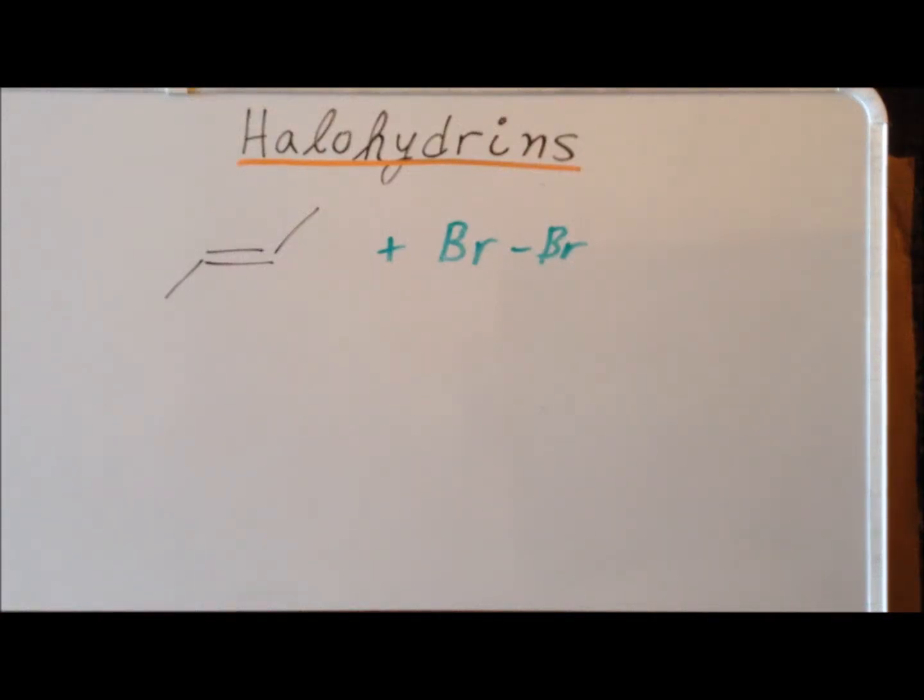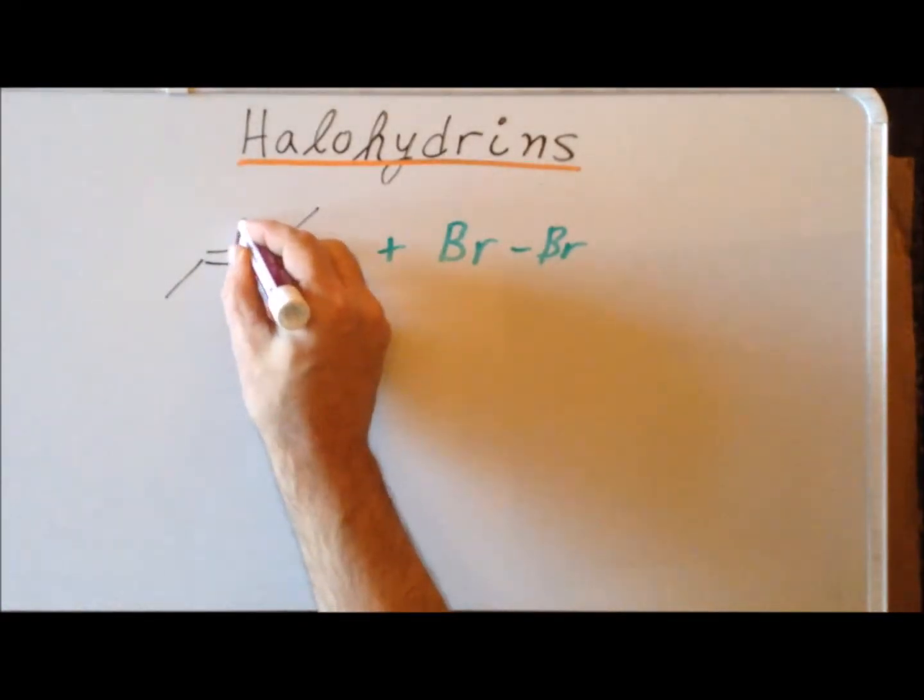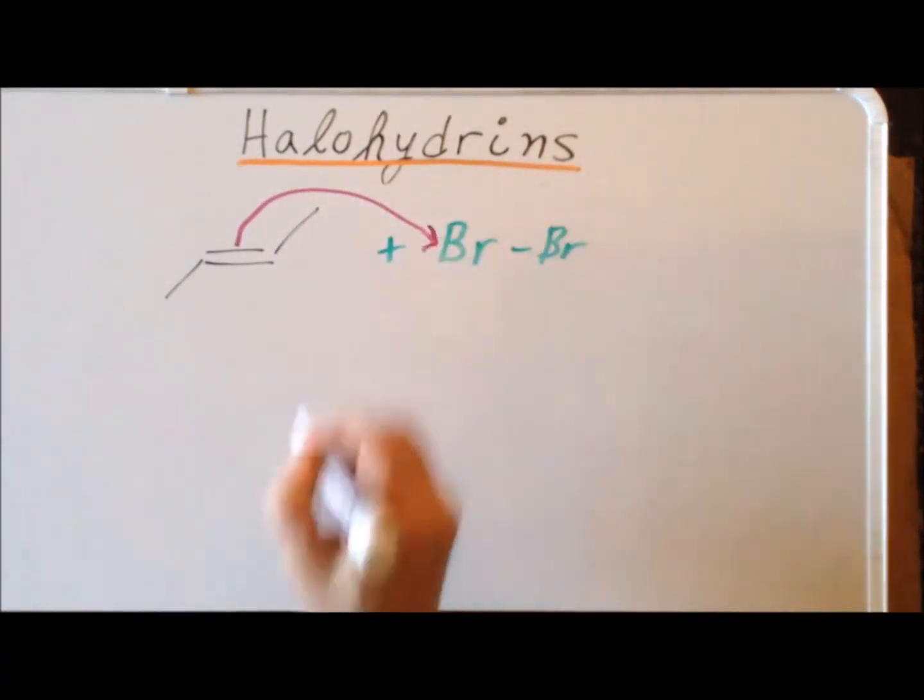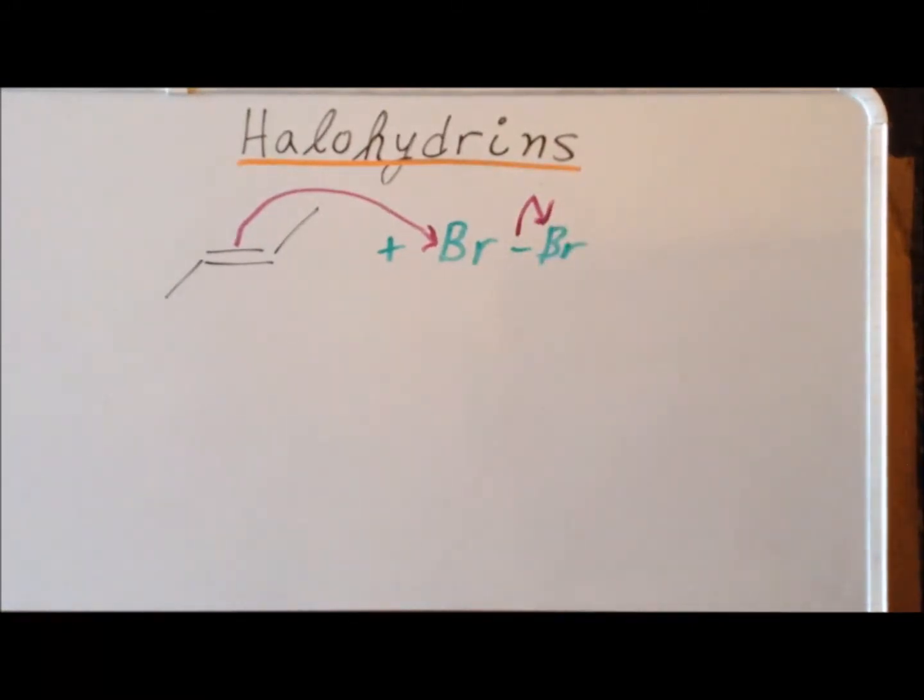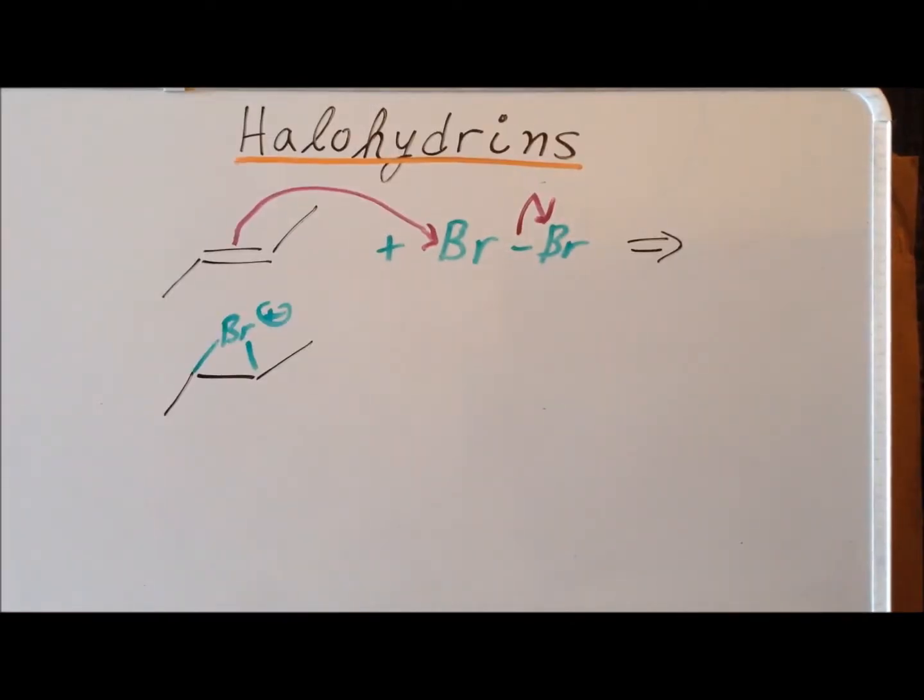Now suppose that we react trans-2-butene with bromine. As we'd expect, the first step is attack of the electron-rich double bond with bromine. And then heterolytic cleavage of the bromine-bromine bond to form a three-membered bromonium ion. Here is our intermediate bromonium ion formed by the electrophilic addition of bromine plus to the carbon-carbon double bond.